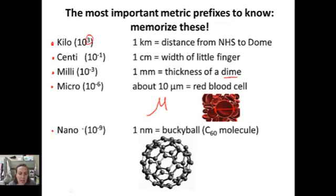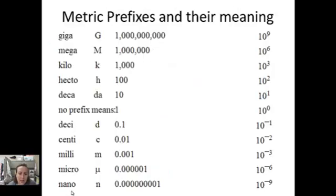Now nano is a thousand times smaller than a micrometer, so it goes from 10 to the negative 6 to 10 to the negative 9. One nanometer is approximately the diameter of one buckyball, which is a carbon molecule that has 60 atoms in a spherical shape. Again, here, here's a list showing those prefixes. If you don't know them, jot them down.